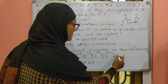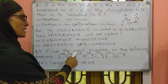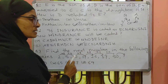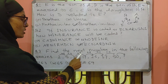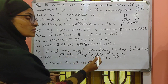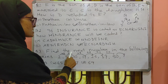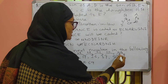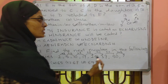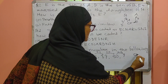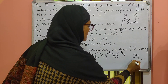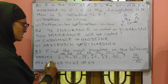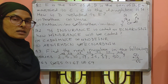The differences are: plus 3, plus 5, plus 7, plus 9, plus 11, plus 13 — these are odd numbers, each increasing by 2. So the next difference is plus 15. 50 plus 15 equals 65. The answer is 65, which is the correct option.